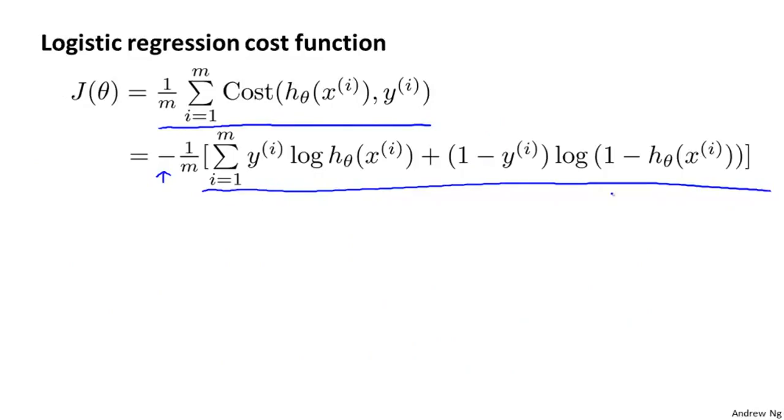And why do we choose this particular function? Well, it looks like there could be other cost functions we could have chosen. Although I won't have time to go into great detail of this in this course, this cost function can be derived from statistics using the principle of maximum likelihood estimation, which is an idea in statistics for how to efficiently find parameters data for different models. And it also has a nice property that it is convex. So this is the cost function that essentially everyone uses when fitting logistic regression models.